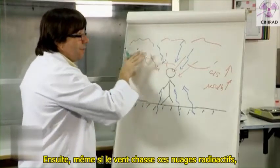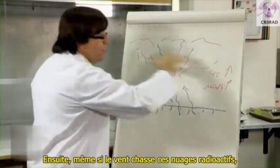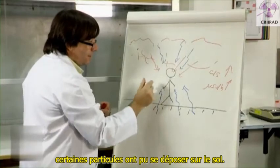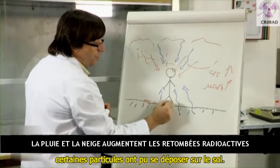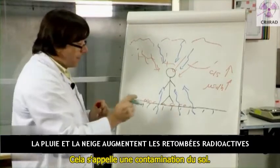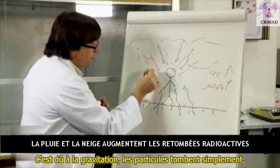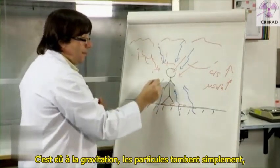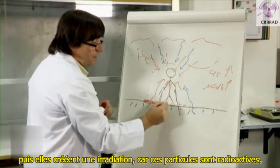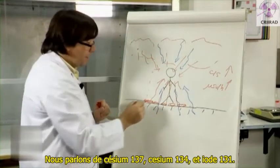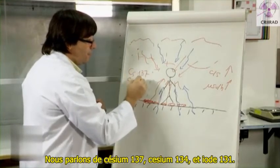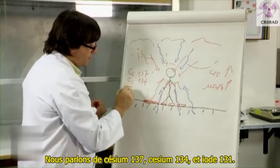But then, even if the wind blows away those radioactive clouds, some of the particles settle down on the ground — this is called ground contamination. This is due to gravitation: the particles come down and create irradiation, because those particles are radioactive. We are speaking about caesium-137, caesium-134, and iodine-131.